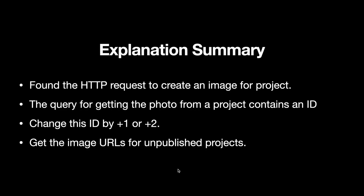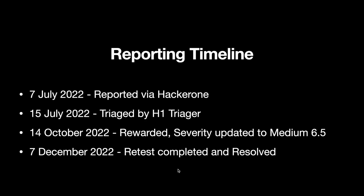To summarize: I found an HTTP request to create an image for a project, and the query for getting the photo contains an ID. I changed this ID by plus one or plus two and got image URLs for unpublished projects. The bug was reported via HackerOne on 7 July 2022, triaged on 15 July, and rewarded on 14th October. There was a change in severity — it was first rated medium 4.3, but they updated it to medium 6.5 per CVSS version 3 due to the higher impact. On 7 December 2022, I completed the retest and the bug got resolved.